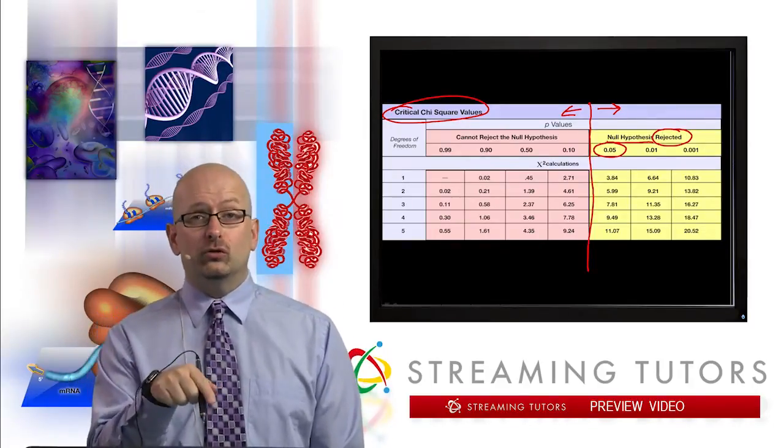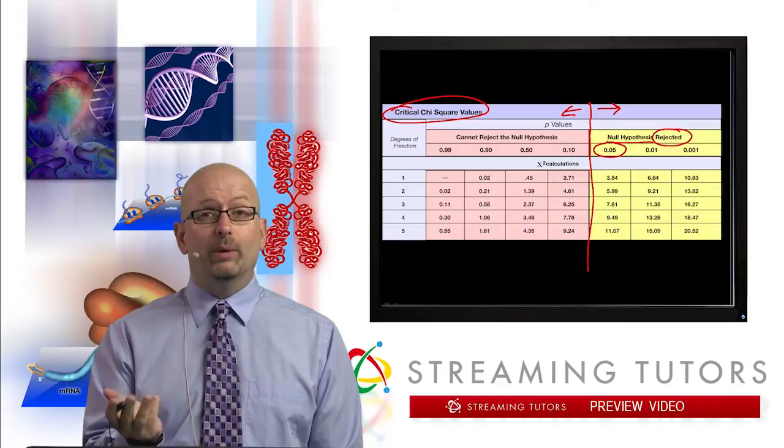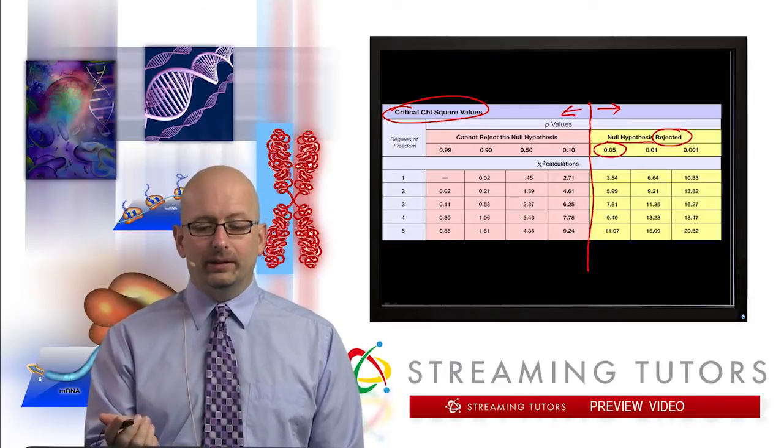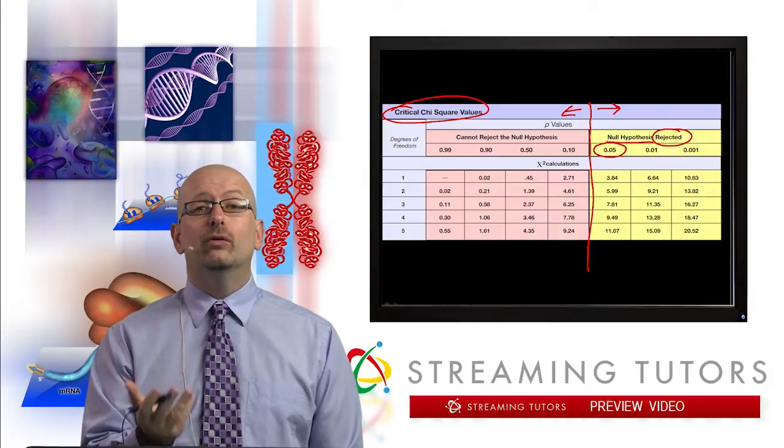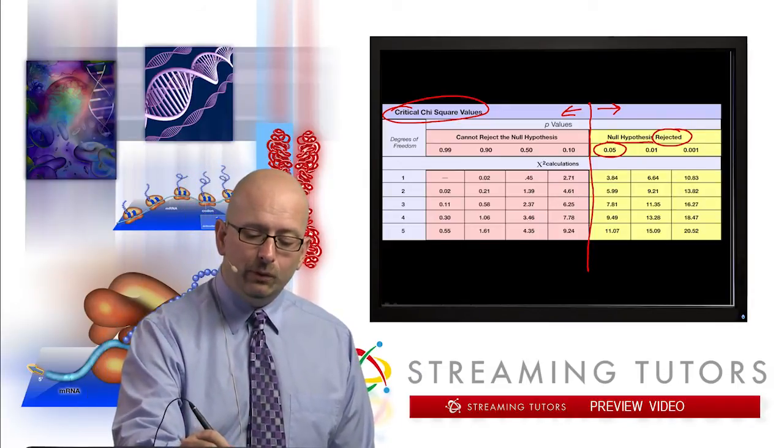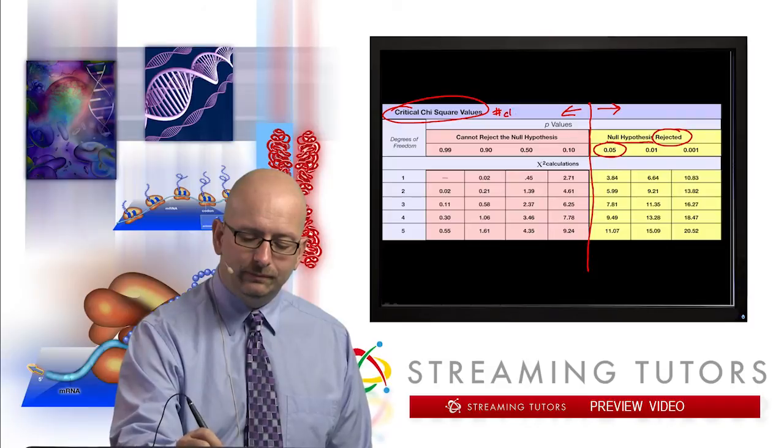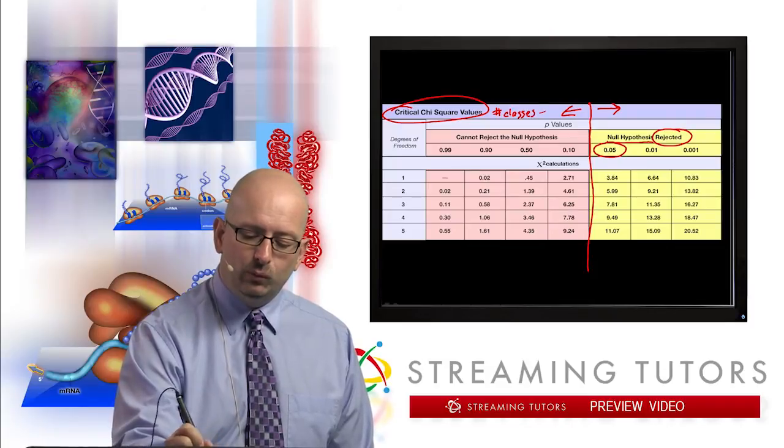Now, in the case we just saw, we postulated that they were unlinked. And what chi-square value did we get? First of all, the degrees of freedom is the number of classes minus one.